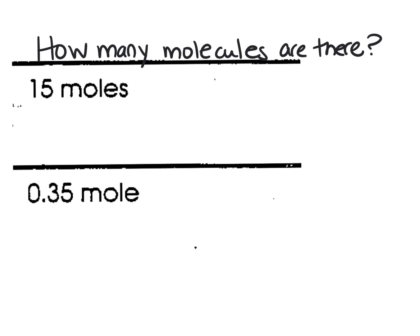The first type of problem I'm going to go over is how to convert from moles to molecules. We need to understand that one mole is a counting unit in chemistry, and that one mole stands for 6.02 times 10 to the 23rd atoms or molecules of a material.